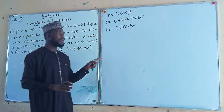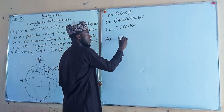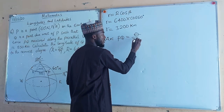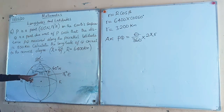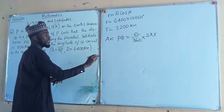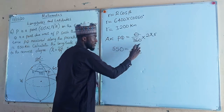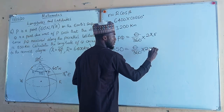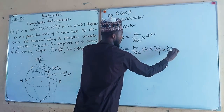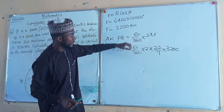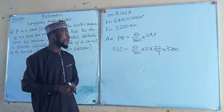We do not know the angular difference yet because one of the longitudes is not given to us, so let us call it theta. The arc length PQ is given by: arc PQ = (θ/360) × 2πr. The distance is given as 550 kilometers, so we have: 550 = (θ/360) × 2 × (22/7) × 3200.